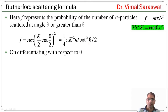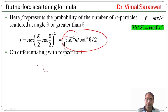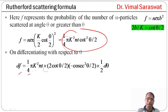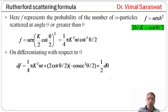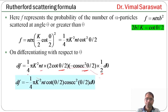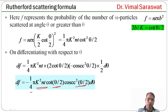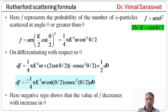On differentiating with respect to θ: df = (1/4)·π·k²·n·t · d[cot²(θ/2)]. The differential of cot²(θ/2) gives 2·cot(θ/2) times (−cosec²(θ/2)) times (1/2)·dθ. So df = −(1/4)·π·k²·n·t · cot(θ/2)·cosec²(θ/2)·dθ. The negative sign shows that the value of f decreases with increasing θ.